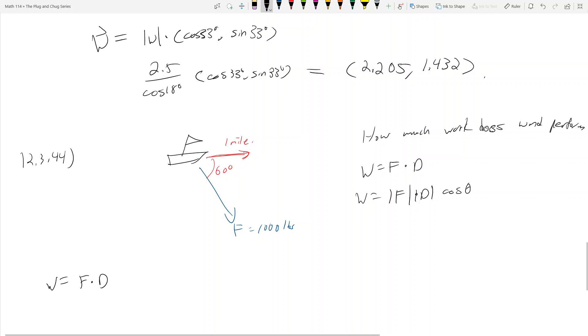Additionally, the force is equal to 1000 pounds. This is actually the magnitude of the force. Force is a vector, so if you're told that the force is 1000 pounds, that's the magnitude of it. And mile isn't a vector, mile is a distance. One mile is equal to the magnitude of the distance.